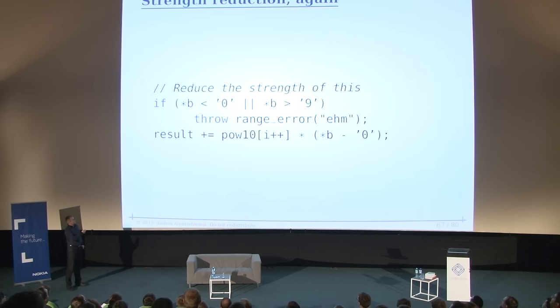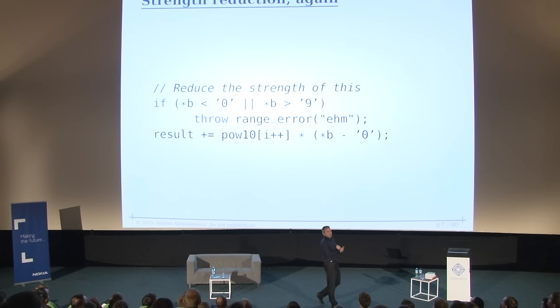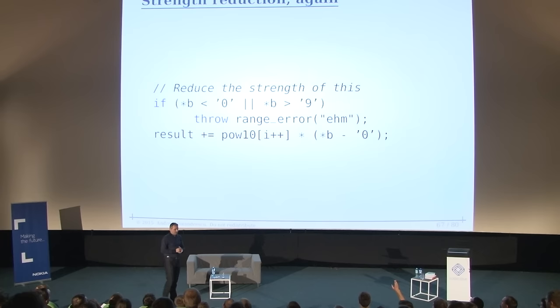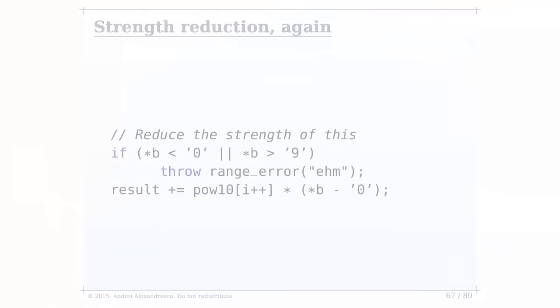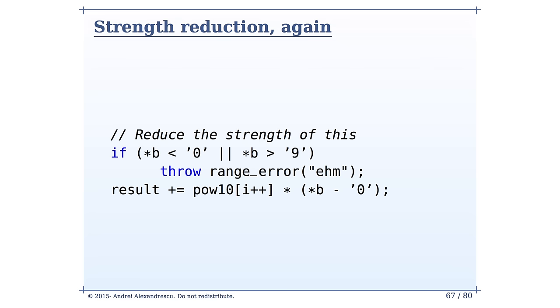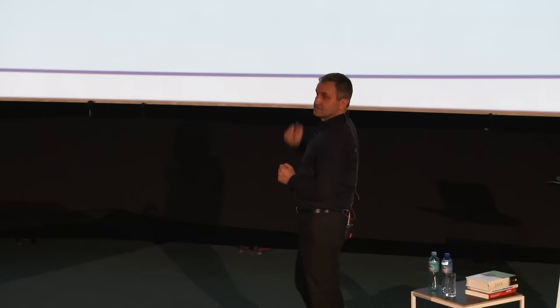So it reduces down to: if `*b < '0'` or `*b > '9'`, throw something; otherwise do the result calculation. How do you make this faster? One idea: mark the branch as unlikely — excellent, the predictor will pick it up and generate better code statically. Another idea: false sharing in caches. Well, it's constant data so false sharing isn't a concern since it only happens when writing. I want to make this faster — give me ideas.